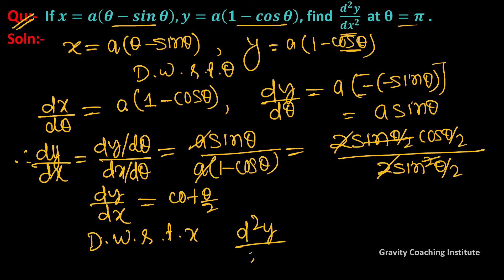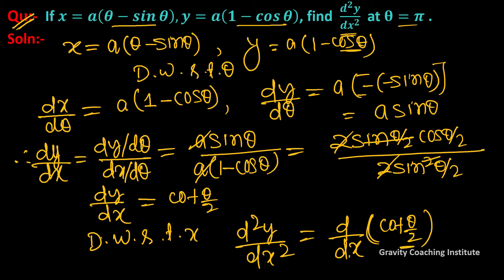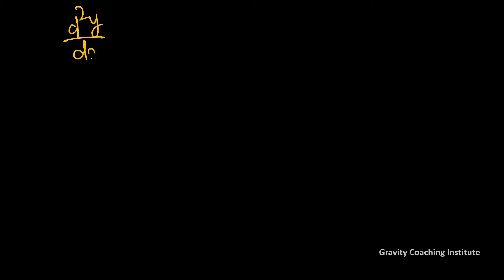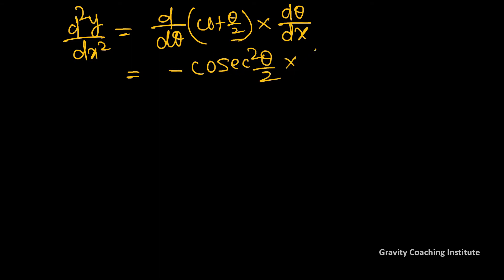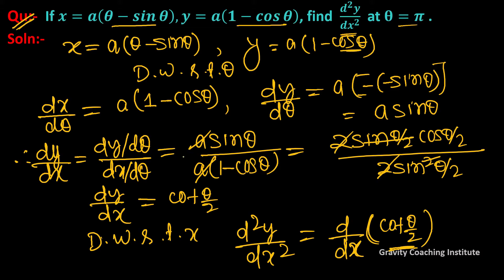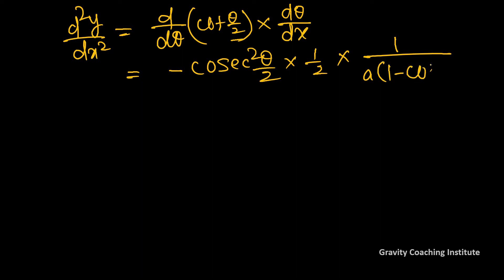Now differentiate dy/dx with respect to x to find d²y/dx². Using the chain rule: d²y/dx² = d/dθ[cot(θ/2)] × dθ/dx. Differentiating cot(θ/2) gives -cosec²(θ/2) × (1/2). And dθ/dx is the reciprocal of dx/dθ, which is 1/[a(1 - cosθ)].